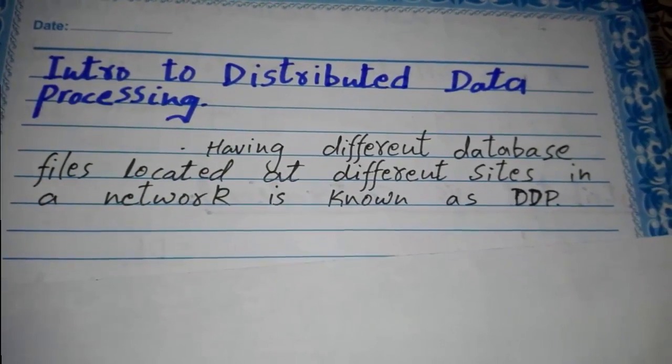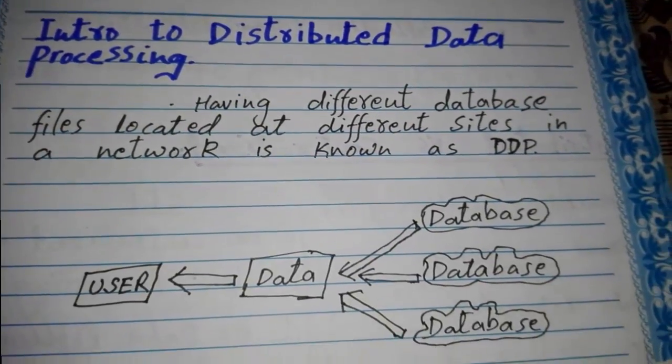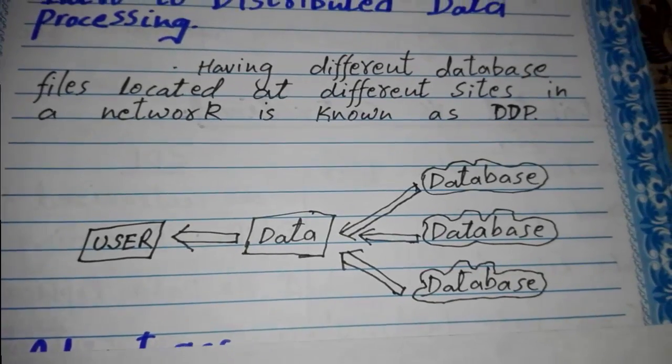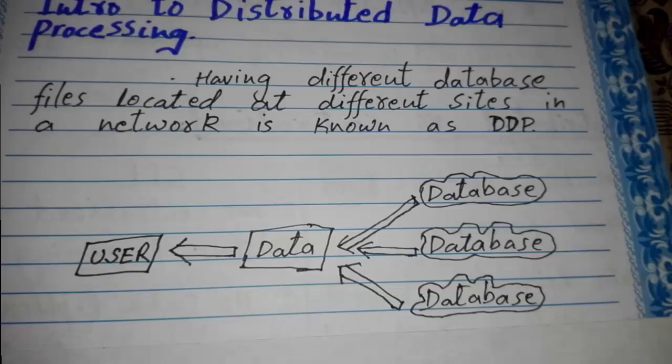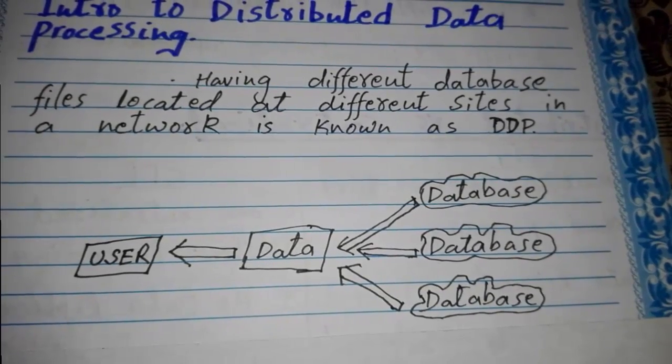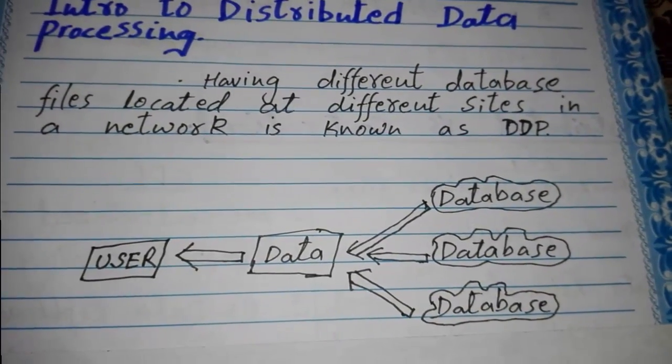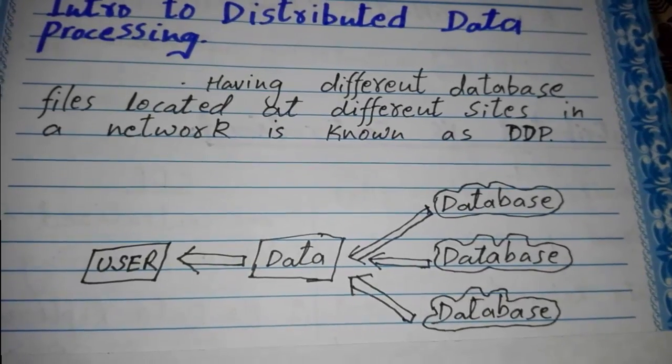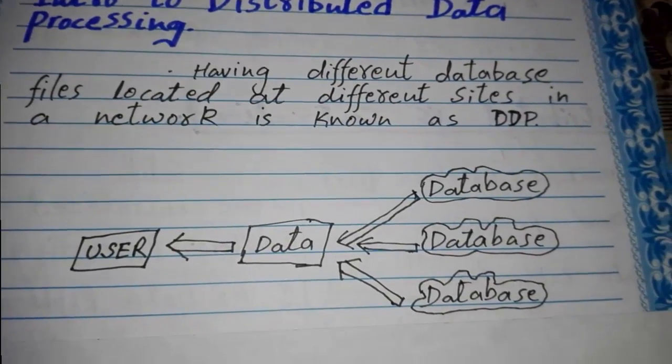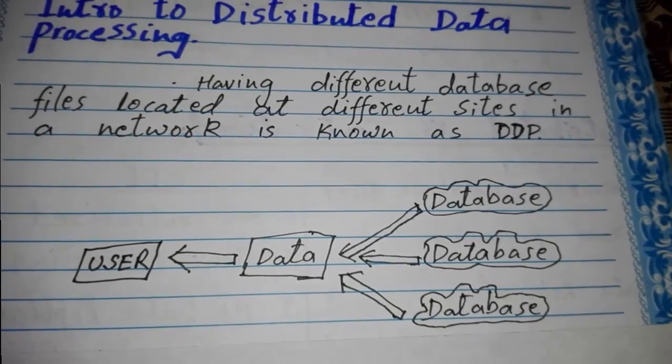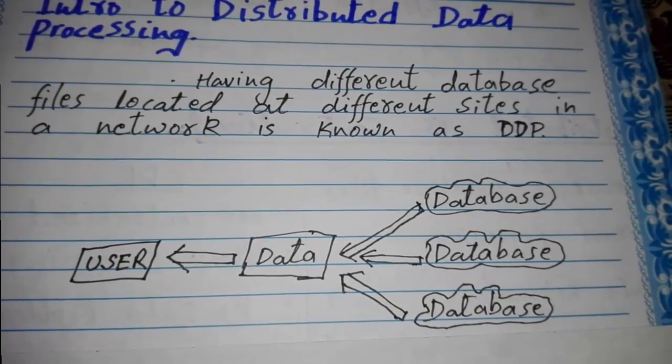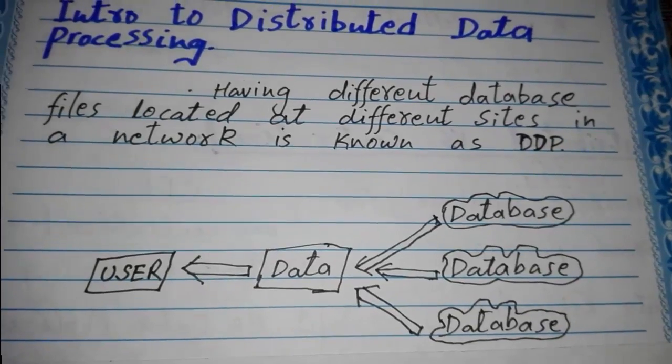I have created a figure to explain the concept. There we have a user and then we have data. The user is accessing data, and data is coming from multiple databases - that could be either database one, database two, database three. No matter which database file is giving data to the user, the user is able to retrieve the data successfully.